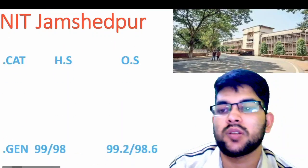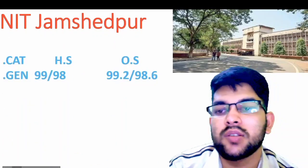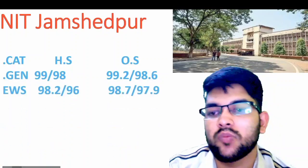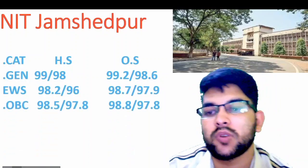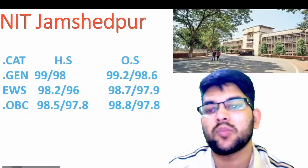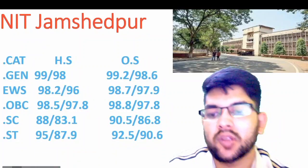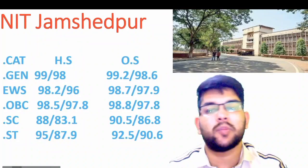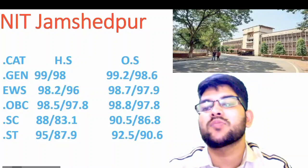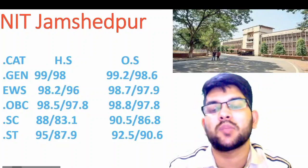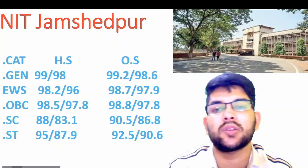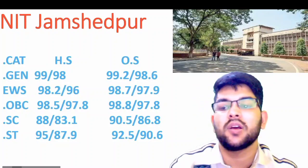Next is NIT Jamshedpur. Here is the information: for General home state 99, other state 99.2. For EWS: 98.2 and 98.7. For OBC: 98.5 and 98.8. For SC: 88 and 90.5. For ST: 95 and 92.5 percentile — that is for home state and other state male candidates; for female you can check after the slash.